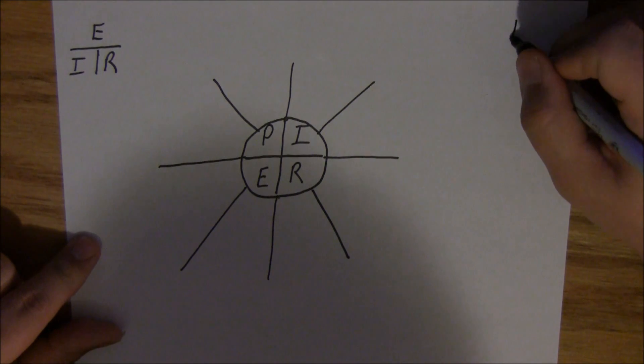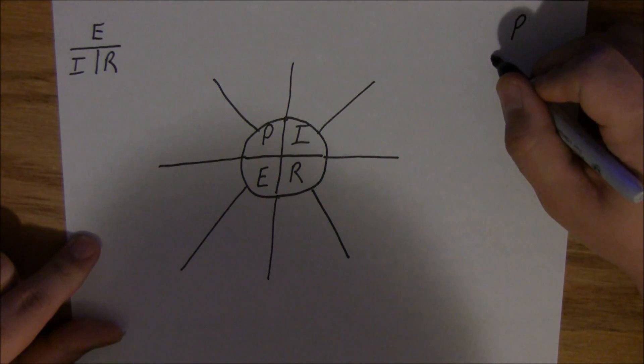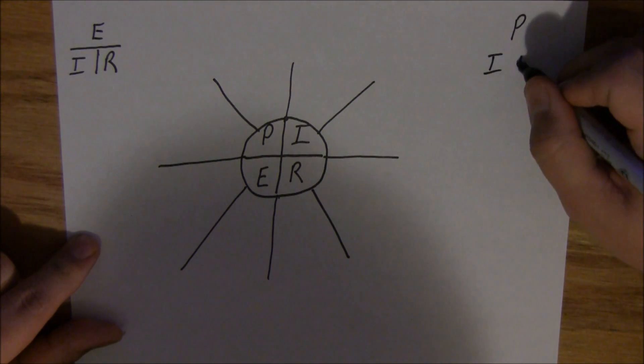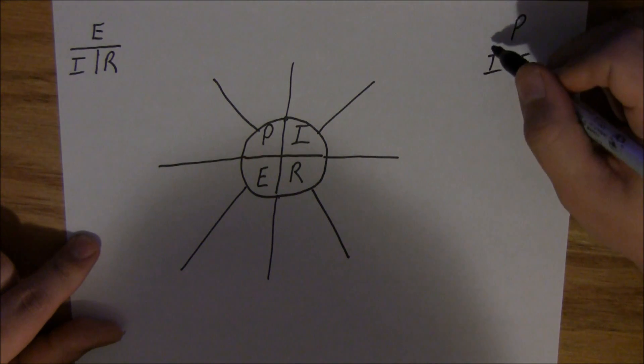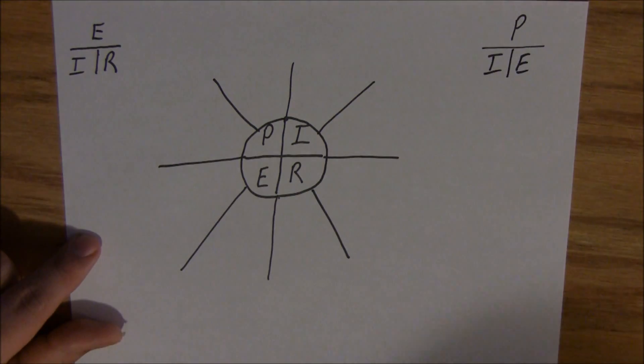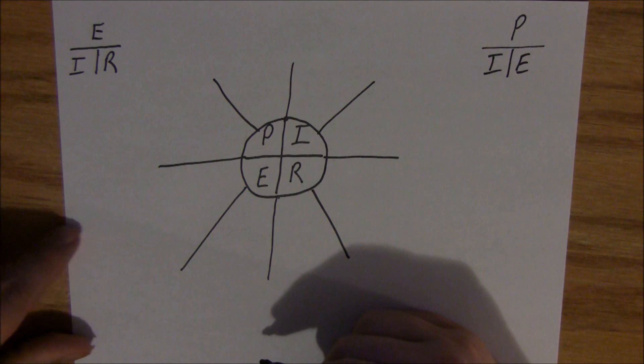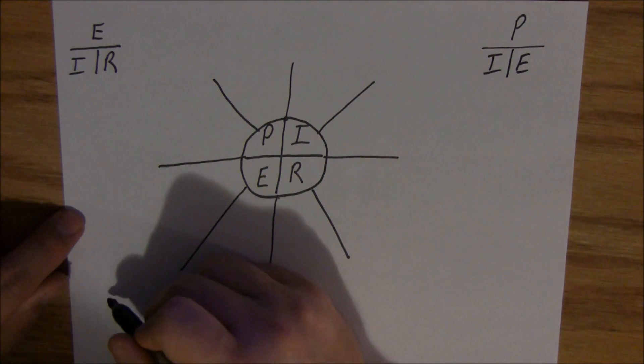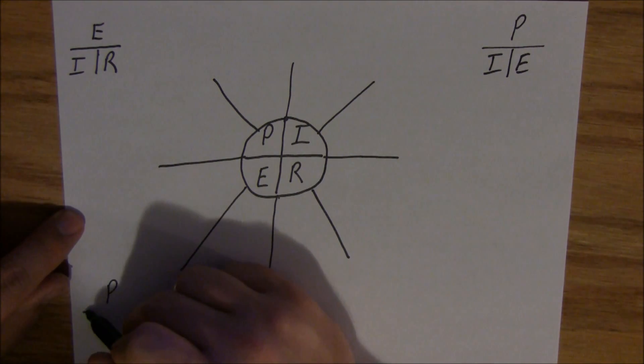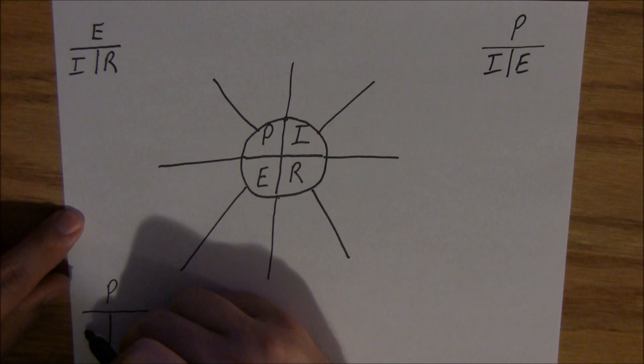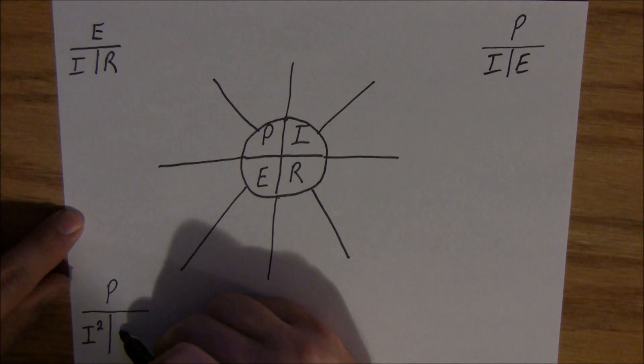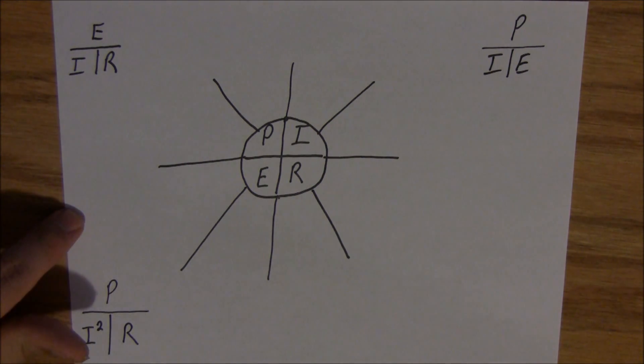Then if you do P over IE, you've got pi. Now this one is starting to sound a little goofy, but the next word is Peter. P over I squared R. PI2R. Peter. It just kind of helps keep it in my head.